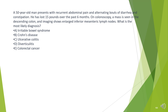A 50-year-old man presents with recurrent abdominal pain and alternating bouts of diarrhea and constipation. He has lost 15 pounds over the past 6 months. On colonoscopy, a mass is seen in the descending colon, and imaging shows enlarged inferior mesenteric lymph nodes. What is the most likely diagnosis?